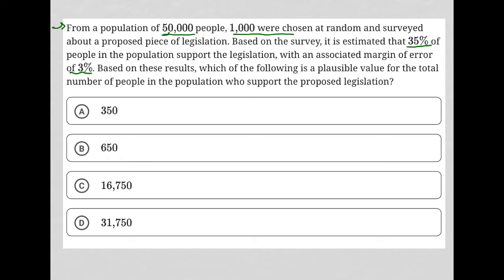So we know that the population size is 50,000. We also know that we expect at least 35% of those 50,000 to support the legislation. So what is 35% of 50,000? Well, that would be 0.35 times 50,000.